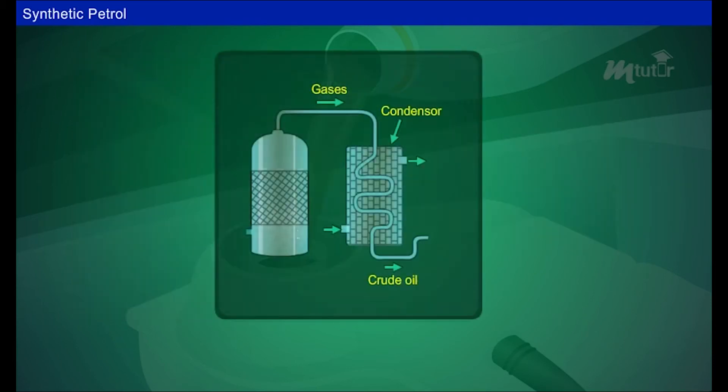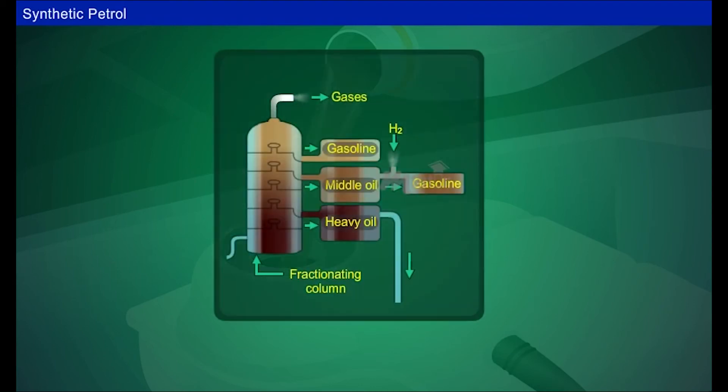Now, the gas is formed in the reaction vessel. This is led to the condenser where a liquid resembling crude oil is obtained. This liquid is fractionated to obtain gasoline, middle oil and heavy oil.